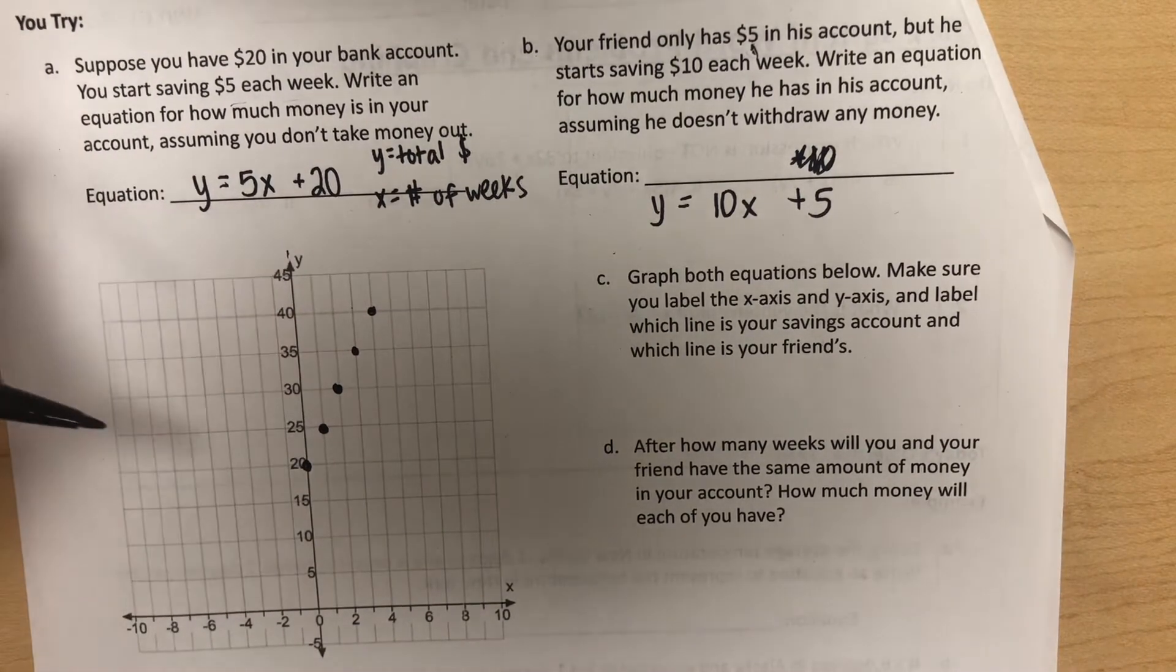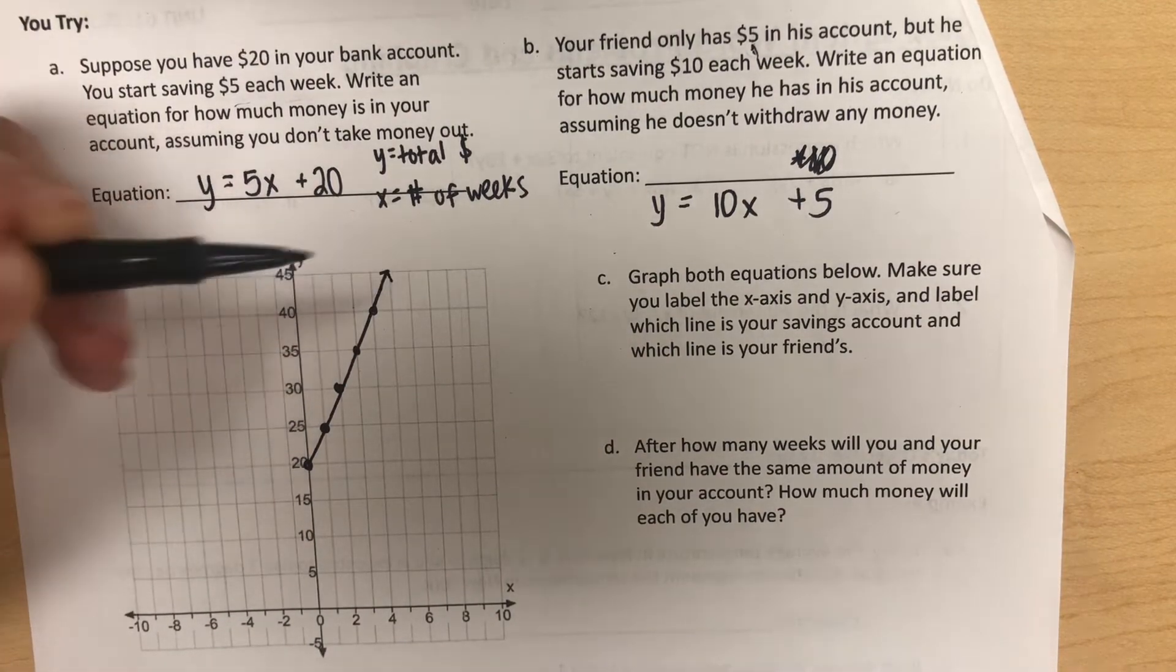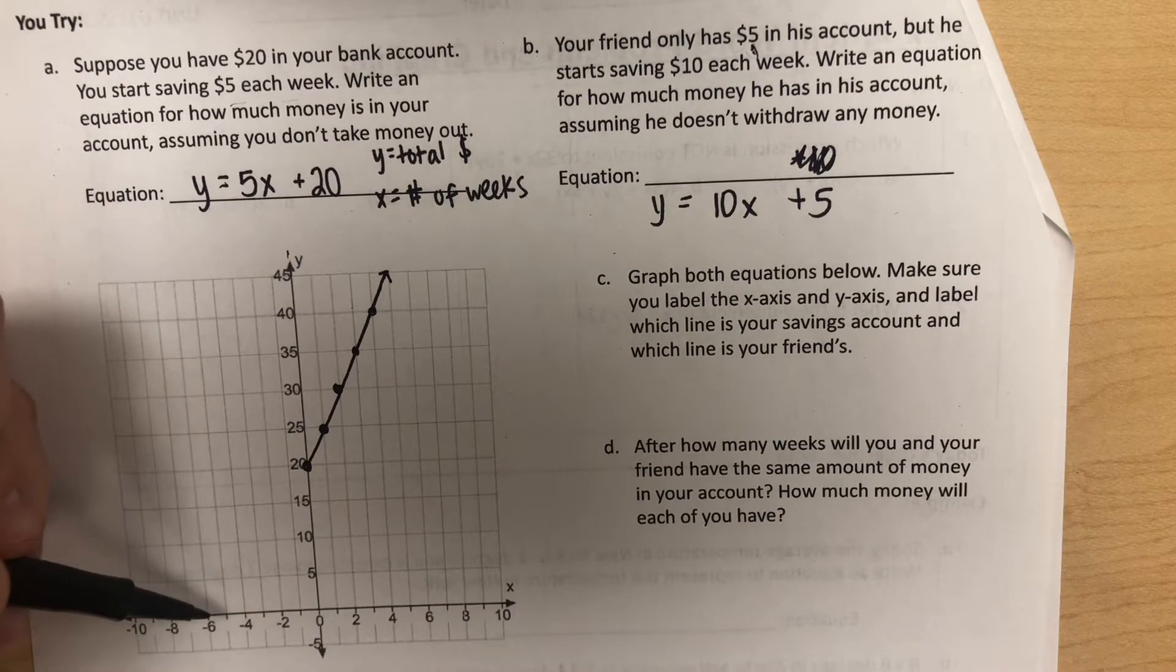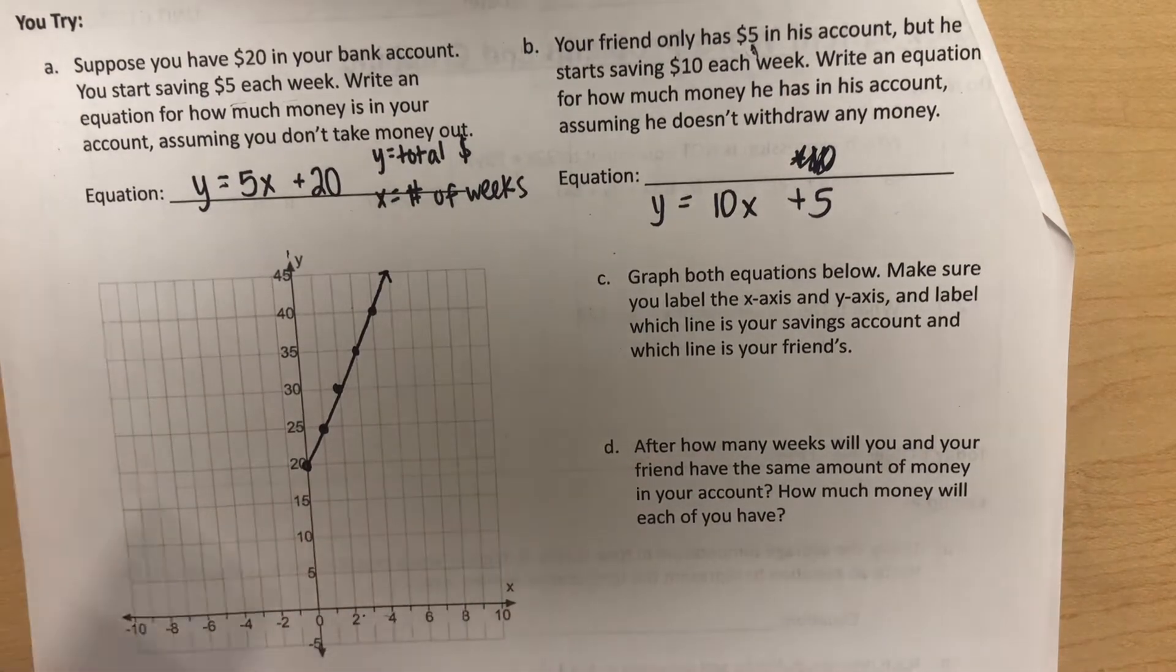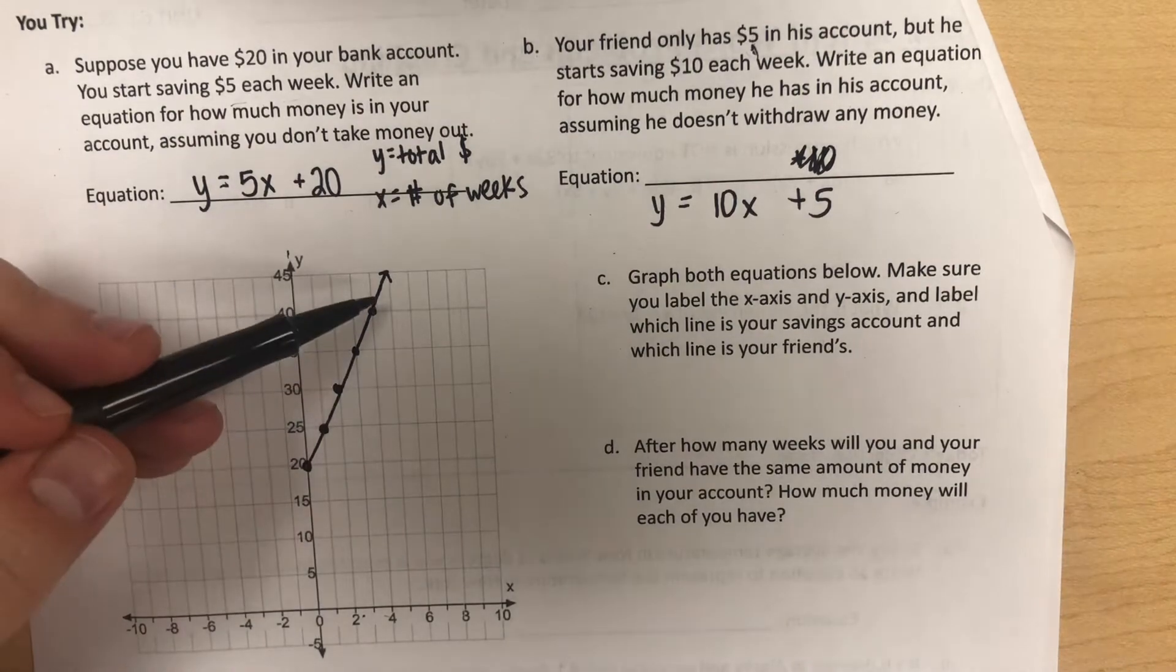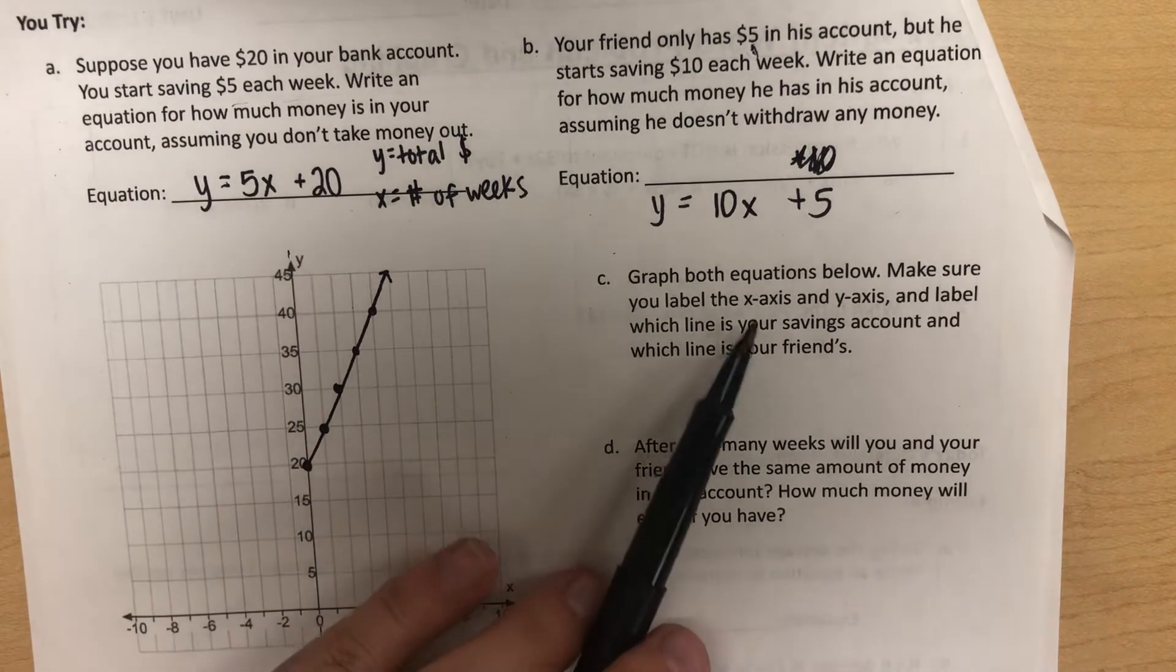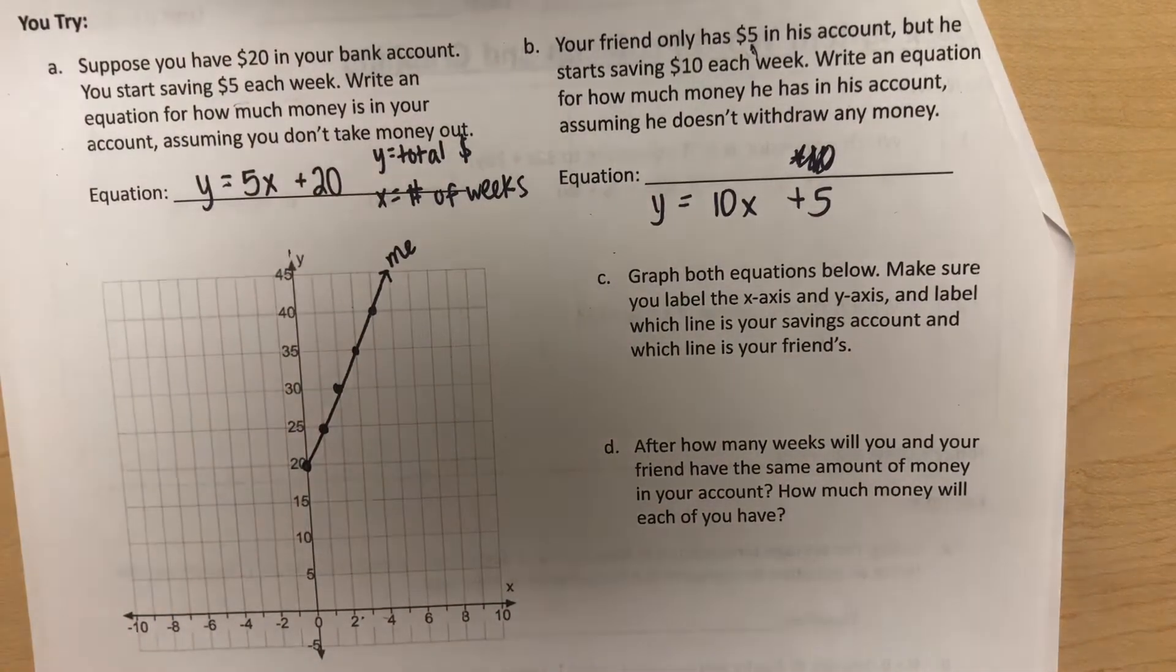When we go to graph our line, it looks something like this. Similar to that first problem with temperature, I don't want my line to come back here. X is representing the number of weeks, so we can't have negative weeks. This line that I just graphed is my savings account. Remember, it said to label everything, so I'm going to label this line as me.